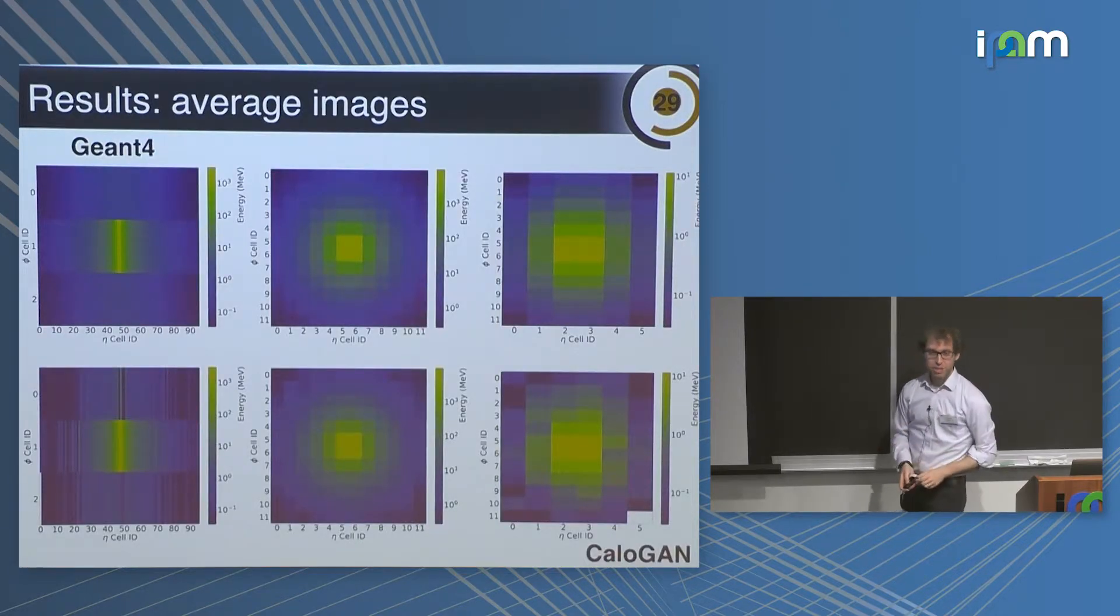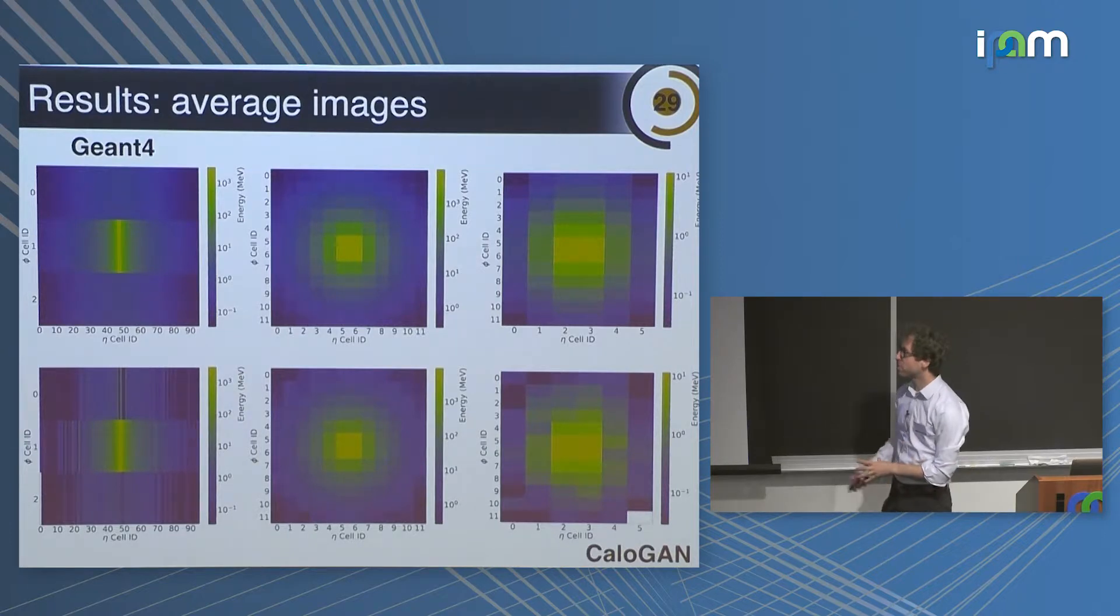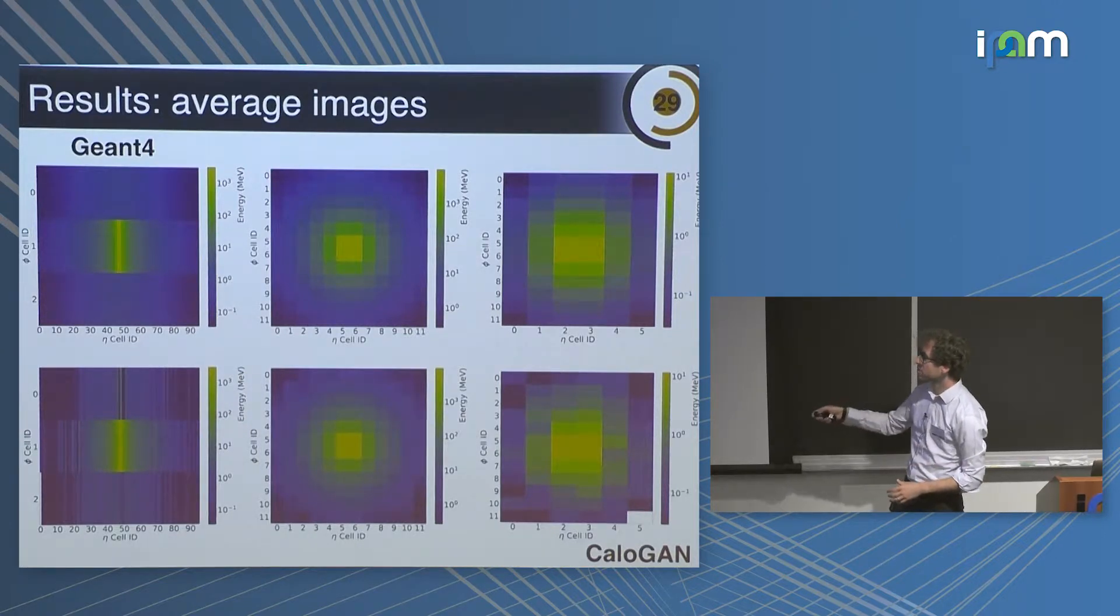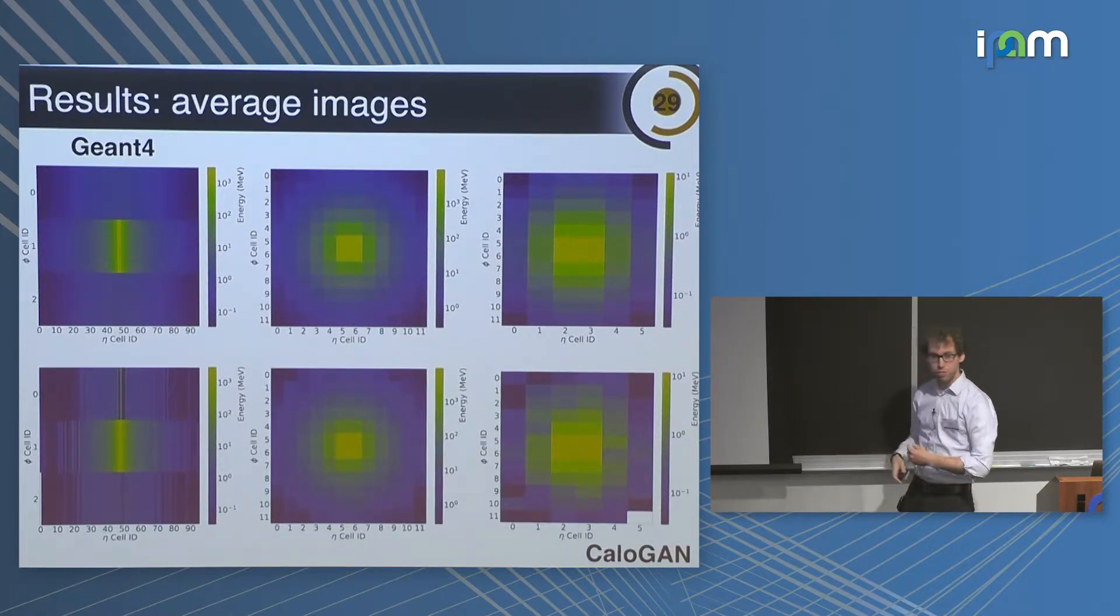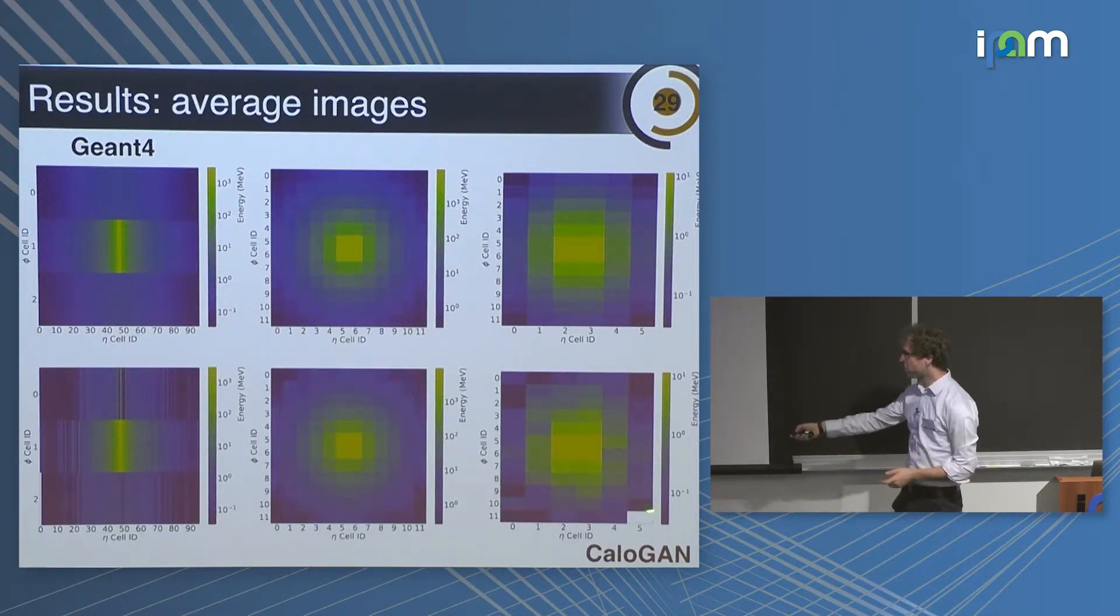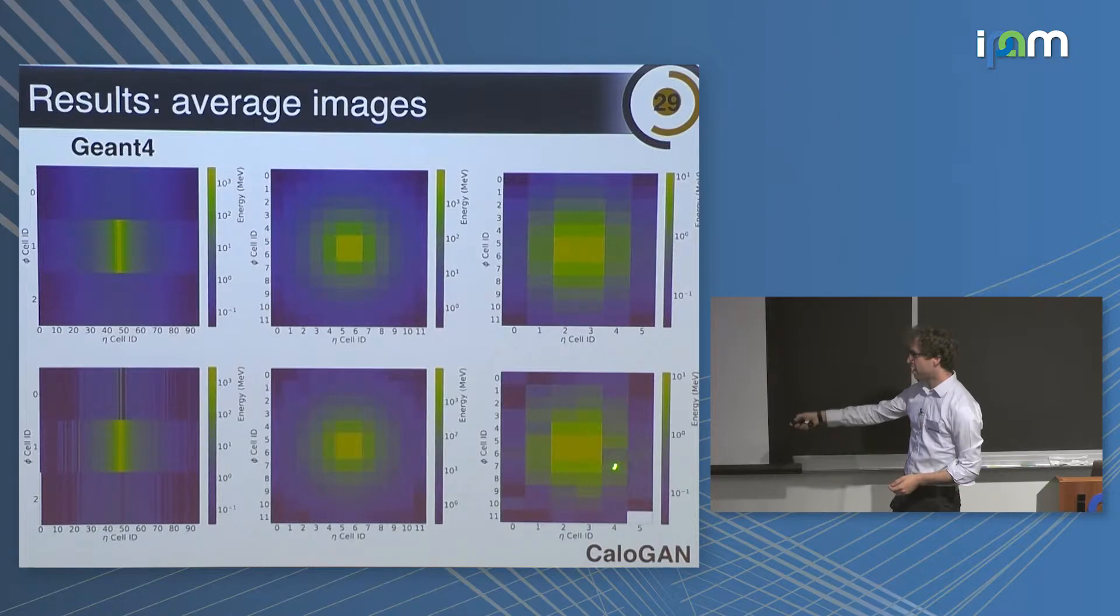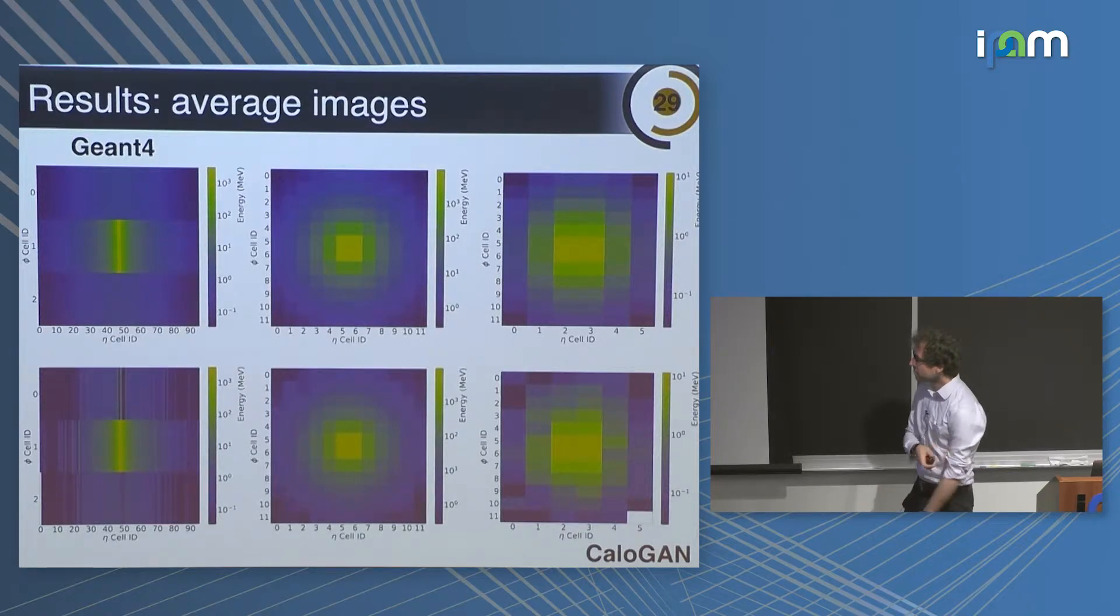Here's some results that show that it seems to work. Here's the average images for the three different layers. This is the physics based simulator, this is the CaloGAN. We've generated some huge number of images and taken the average. Of course the average is a really small low dimensional projection of this high dimensional space. So this is necessary but obviously not sufficient to show that it's working. It seems to work pretty well. But of course you can see that there's some non smooth features that are present here.